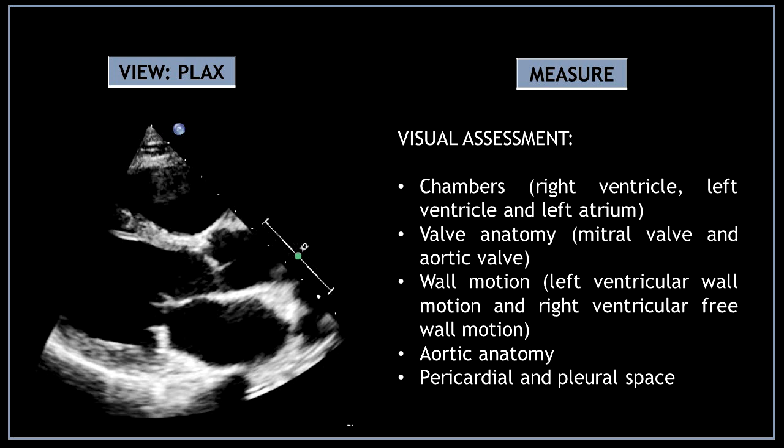First, obtain a parasternal long axis view and perform a visual assessment of the cardiac chambers — pay attention to the right ventricle, left ventricle, and left atrium. Then do a visual assessment of the mitral valve and aortic valve anatomy. Next, assess wall motion, checking left ventricular wall motion and right ventricular free wall motion. Also assess the aortic anatomy and do a visual assessment of the pericardium and pleural space.